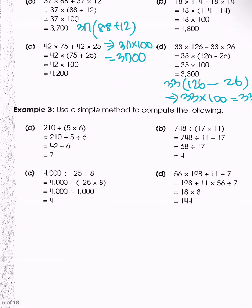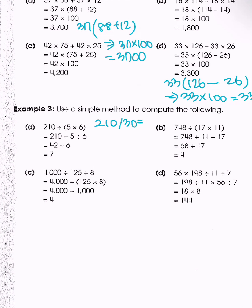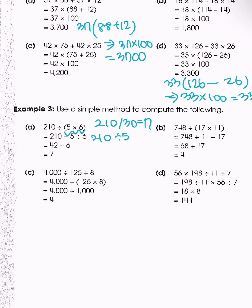For the next type, we have 210 divided by 30. We know that result is 7, so we can do that directly. But for harder cases like 210 divided by 15, we can distribute the division: 210 divided by 5, then divide by 6. That gives 42 divided by 6, which equals 7.